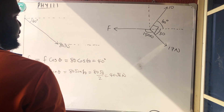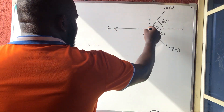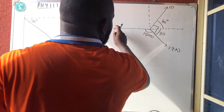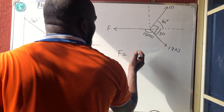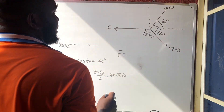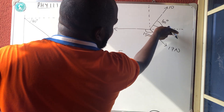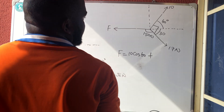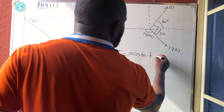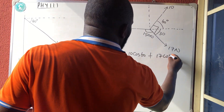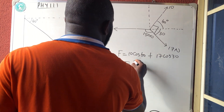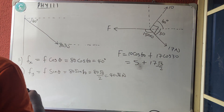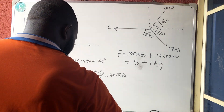Resolving horizontally and balancing left and right: F equals the sum of horizontal components. The 10 Newton force contributes 10 cos 60°, and the 17 Newton force contributes 17 cos 30°. So F = 5 + 17√3/2.